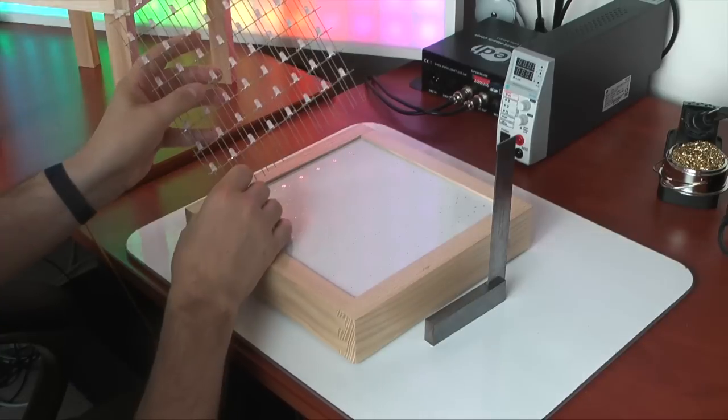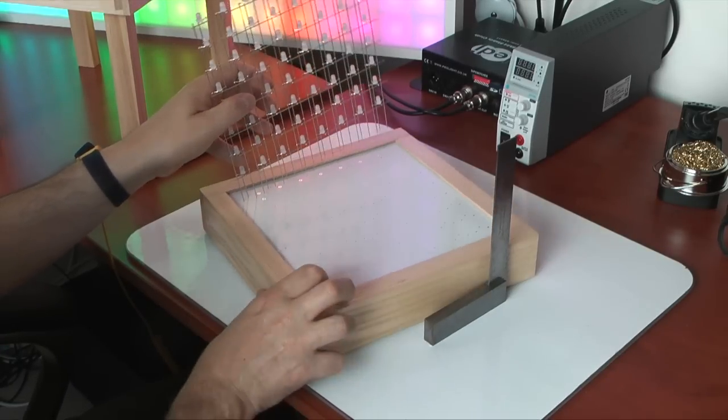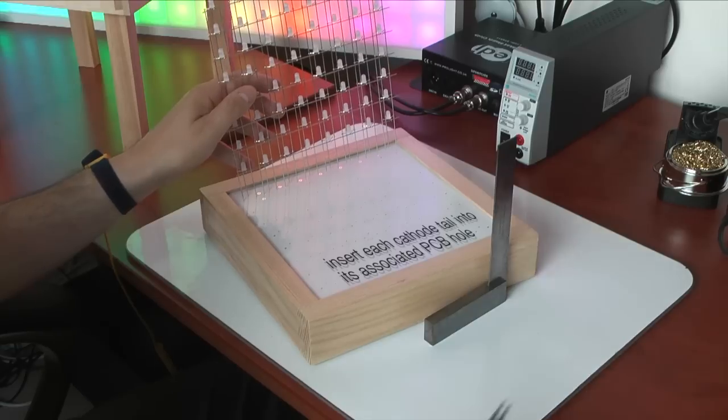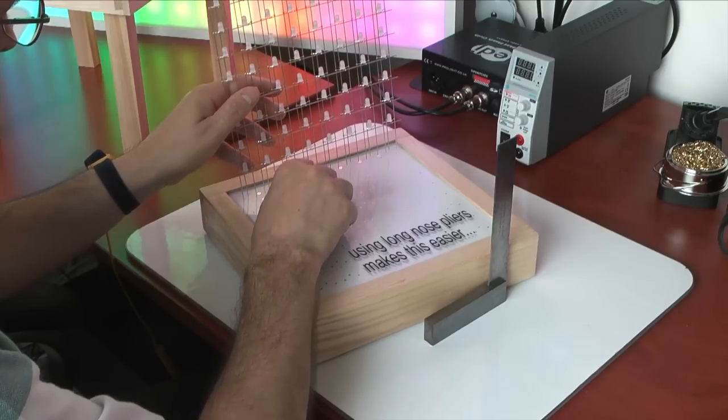To get started, I take the first 8x8 panel and present it at a slight angle. This enables me to insert each of the wires into its associated PCB hole one at a time, and I use a pair of long nose pliers to help guide the wires into the holes.